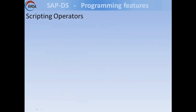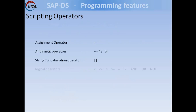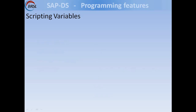Now let us see the operators supported by the Scripting Language. All basic operators are available: assignment operator, arithmetic operators, string concatenation operator to join strings, and logical operators for preparing conditions. Advanced logical operators like is null and is not null are also supported. There are three types of variables: substitution parameters, global variables, and local variables.